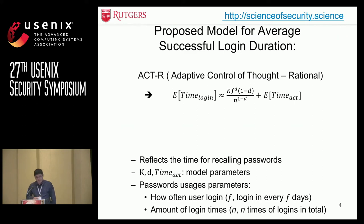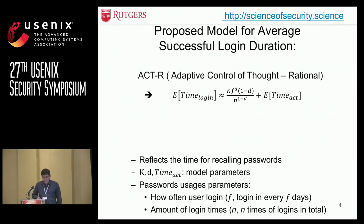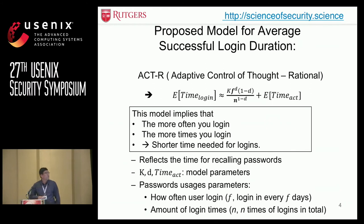This is our final model result; details on how we derived it can be found in our paper. At a high level, we can see there are parameters k, d, and the time for ACT — those are just parameters we can fit with our data. The two parameters I want to highlight that most affect our model are: first, how often the user logs in, and second, the total number of login times. We represent them as f and n. f is positively proportional to the login time, and n is negatively proportional to it. The more often users log in and the more times they log in, the shorter time is needed for performing the login.